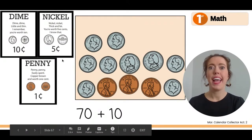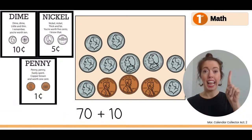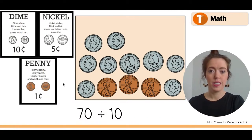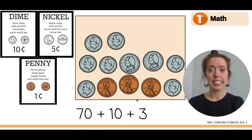Nope. So we have seventy plus ten. And now we have pennies. And how much are pennies worth? One cent. So when we count pennies, we count by ones. Let's count. One, two, three, and that's all the pennies. So three cents worth of pennies.